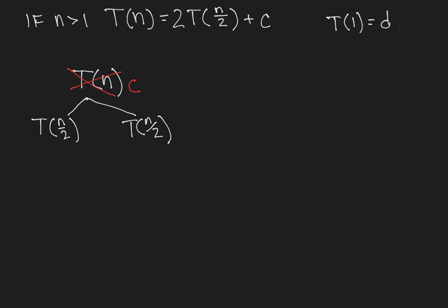Well, the recurrence applies also to t of n over 2. So if we plug in t of n over 2, or plug in n over 2 for n in the equation, we see that t of n over 2 is actually 2 times t of n over 4 plus the constant c. And that happens in both places where we see t of n over 2.